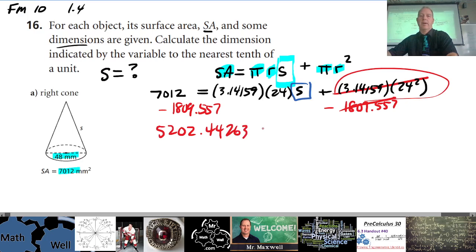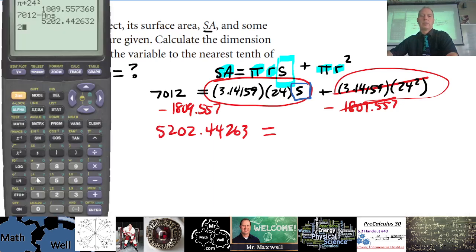All right, now this over here, let's evaluate this part. So let's do π times 24. So 24 times π equals this number, 75.398